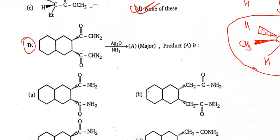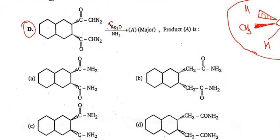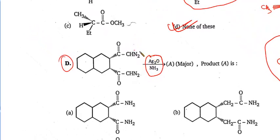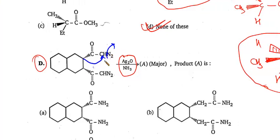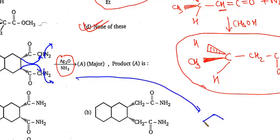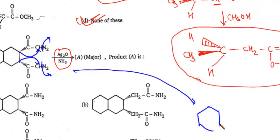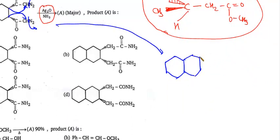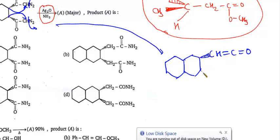Now question D: reacting with Ag₂O — Wolff rearrangement again. This carbon group migrates onto CH, N₂ leaves — same story. Let me explain here: the two rings you can draw as they are. This carbon went onto CH, giving C=C=O (ketene), with position unchanged.